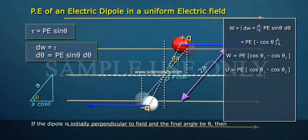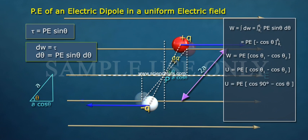If the dipole is initially perpendicular to field and the final angle be theta, then U equals PE of cos 90 degree minus cos theta equals minus PE cos theta. Vectorially therefore U equals minus P bar dot E bar.